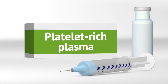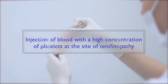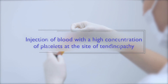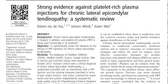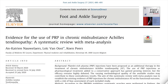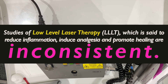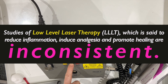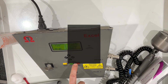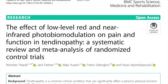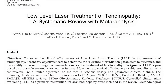Another controversial treatment involves the injection of platelet-rich plasma (PRP), a preparation of autologous blood centrifuged to contain a high concentration of platelets at the site of tendinopathy. Results are inconsistent, with systematic reviews showing little to no benefit over placebo for lateral elbow, patellar, or Achilles tendinopathy. Likewise, studies of low-level laser therapy — said to reduce inflammation and edema, induce analgesia, and promote healing — are inconsistent, with several systematic reviews showing inconclusive results for rotator cuff, lateral elbow, and Achilles tendinopathy.